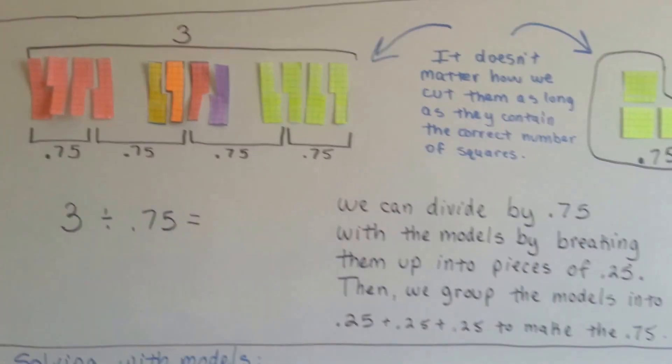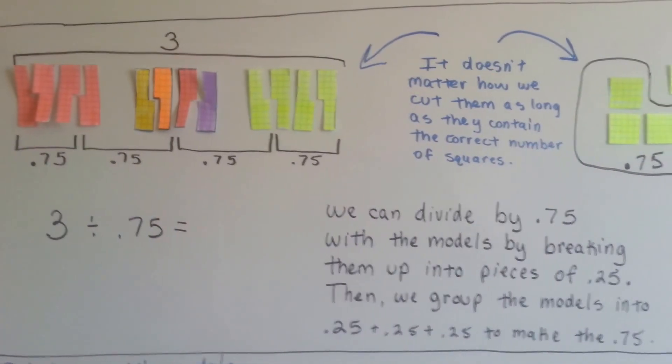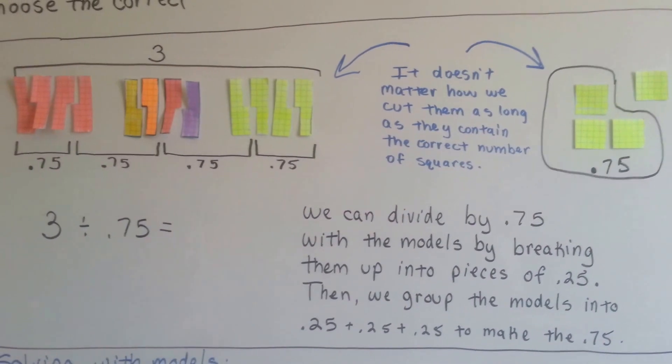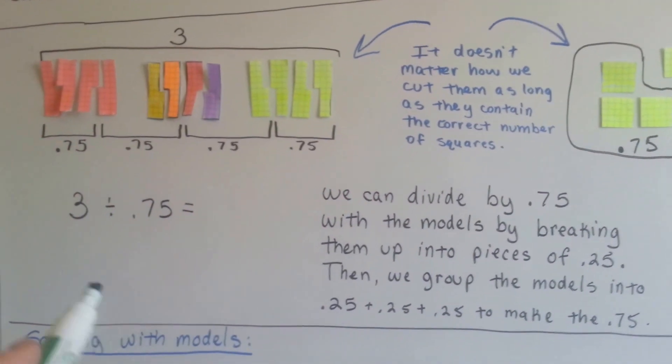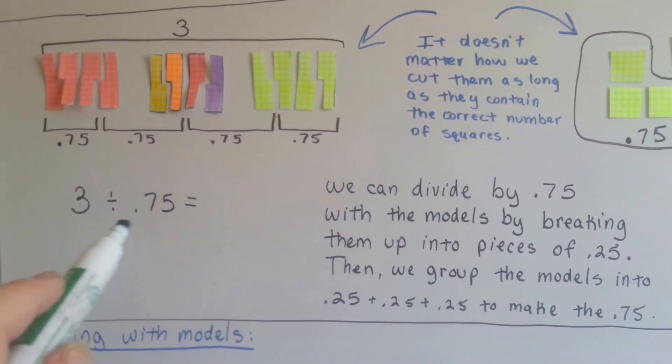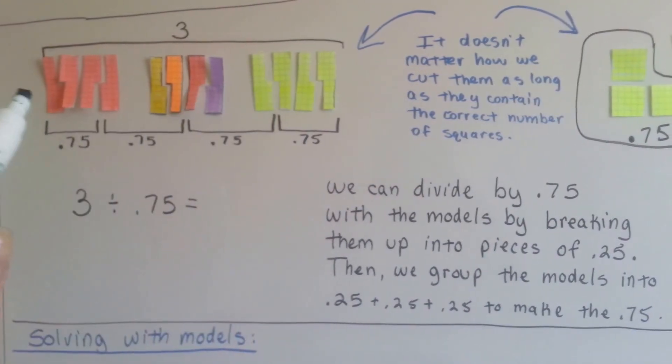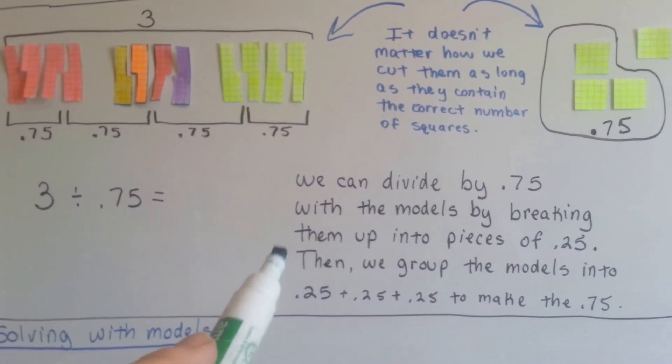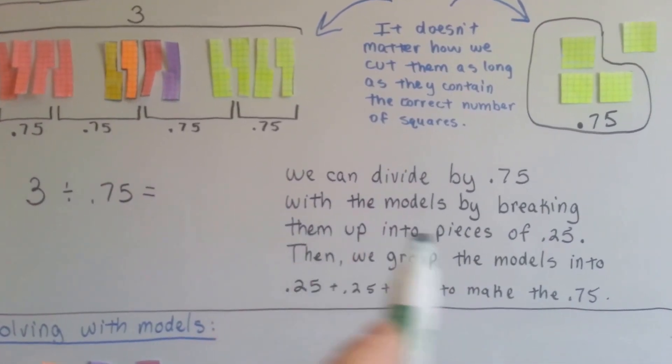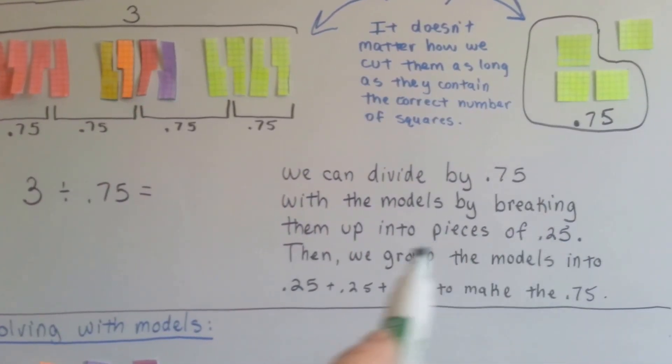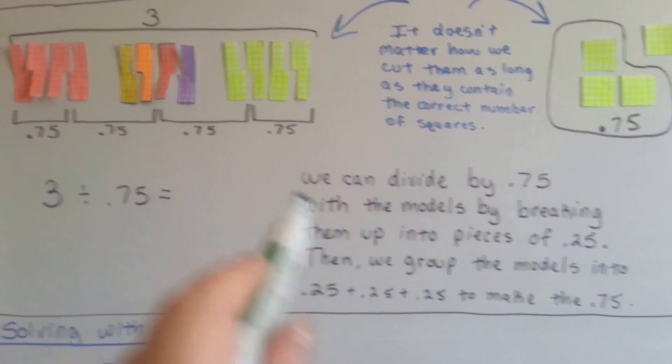Now when we're making models to help us with our division, it doesn't matter how we cut them, as long as they contain the correct number of squares. If our equation was 3 divided by 0.75, and you had squares of a hundred, the best way to do it was by breaking them into groups of 25 hundredths and then regrouping them to make seventy-fives. That's what I did here.